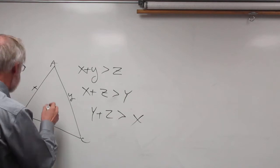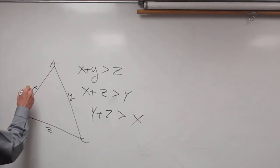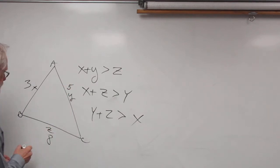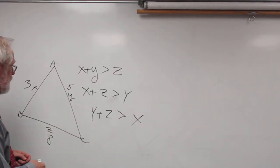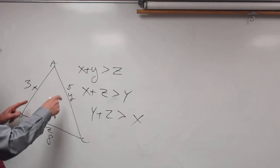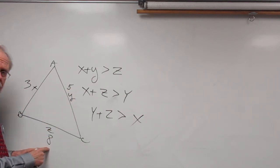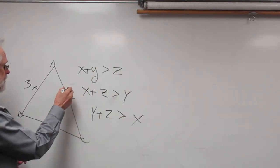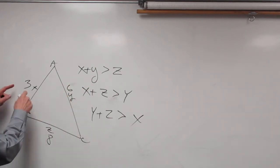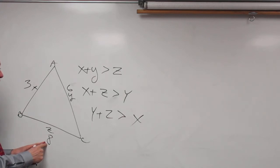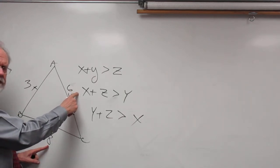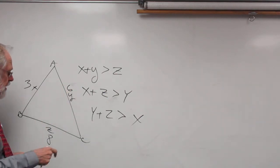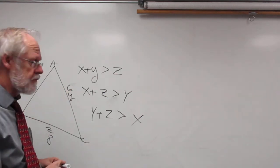Let's see what happens if we put some numbers to that. Let's say the sides are 3, 5, and 8. Now let's see if that works. 5 plus 3 is equal to 8, but it's not greater than 8, so we have a problem — that won't work, that doesn't make for a triangle. Let's try 3, 6, and 8. 6 plus 3 is 9, that's greater than 8. 8 plus 6 is 14, that's greater than 3. And 8 plus 3 is 11, that's greater than 6. So this is a possible triangle.